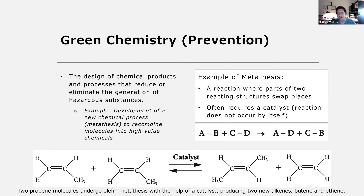I'm going to give some examples about some of these approaches, starting with one example of the prevention approach using the concept of green chemistry. Green chemistry is the design of chemical products and processes that reduce or eliminate the generation of hazardous substances — basically finding more efficient chemical reactions that don't produce hazardous byproducts, but rather produce the high-value materials we desire.